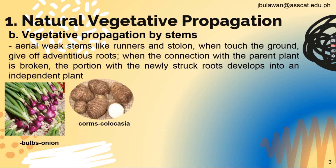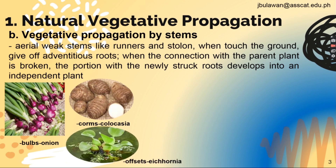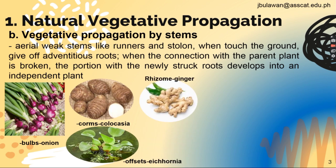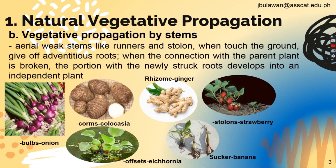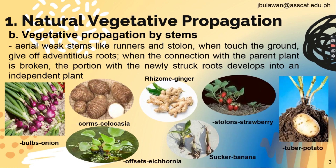For the corms, an example is kolakasha, dasheen, or taro. For offsets, the example is Eichhornia. For the rhizome, ginger. For the sucker, banana. For the stolons, strawberry. And for the tuber, potato.